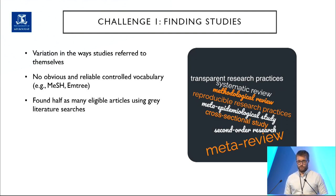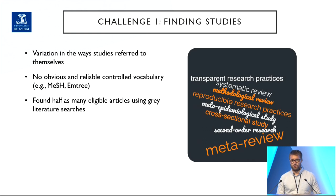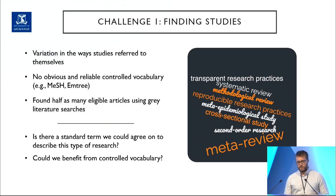In terms of the first challenge, we worked closely with an information specialist at Cochrane to design the search strategy. What we noticed straight away is that studies we knew would be eligible were often referring to themselves in very different ways — some as meta-reviews, others as meta-epidemiological studies, cross-sectional studies, and so on — which complicated the search design. At the time, in July 2021, there didn't appear to be any obvious or reliable controlled vocabulary to use, such as MeSH terms in MEDLINE or M-Tree terms in EMBASE. It wasn't a surprise that we found about half as many articles in our grey literature searches as in our main database searches. We wondered: is there a standard term for this space, and could meta-science as a field benefit from controlled vocabulary?